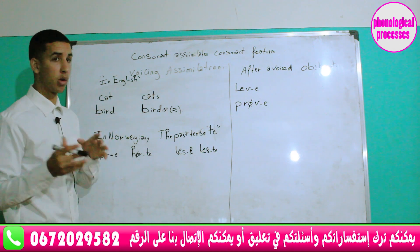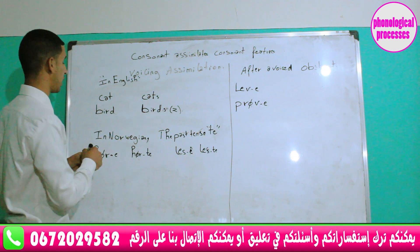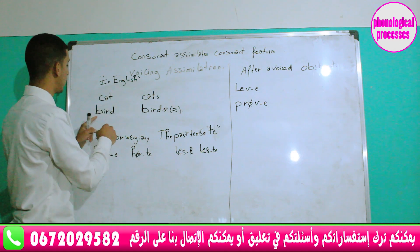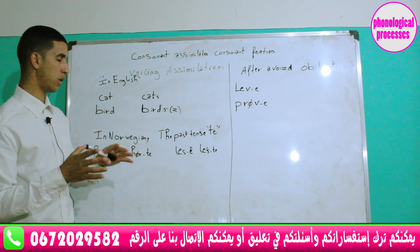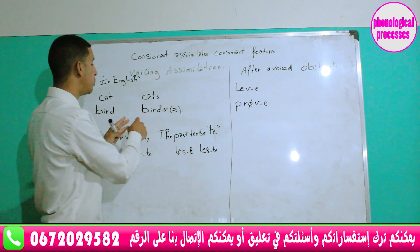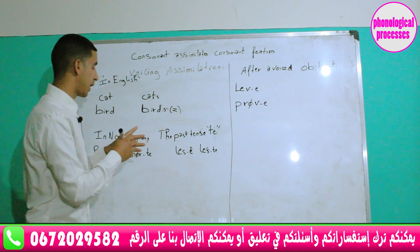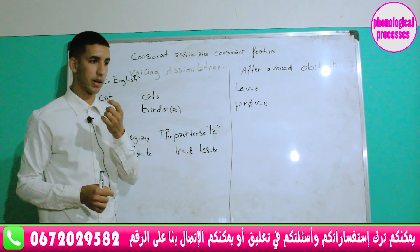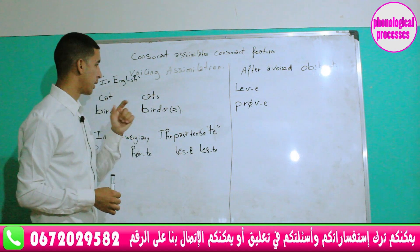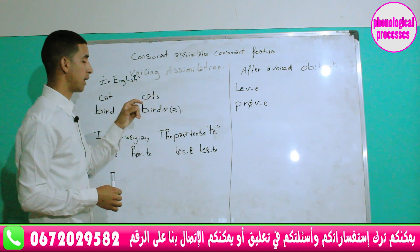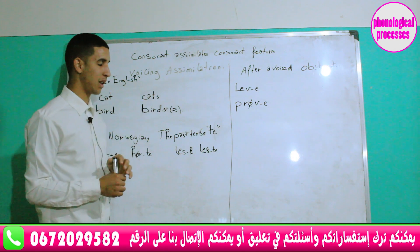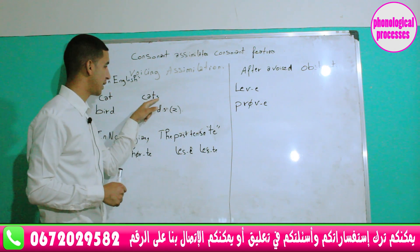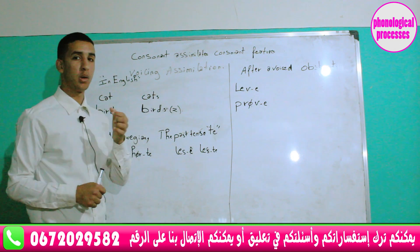Let's take the English plural -s as an example. In singular form we have 'cat' and 'bird', but in the plural form we have 'cats' and 'birds'. In 'cats', the -s is pronounced as a voiceless alveolar sound, due to the fact that the last consonant is voiceless.